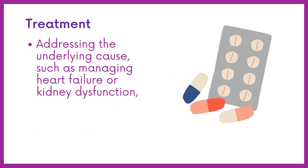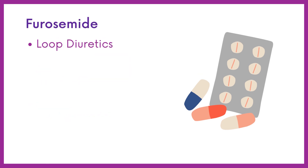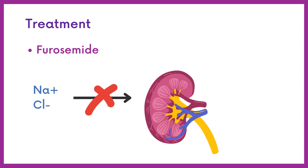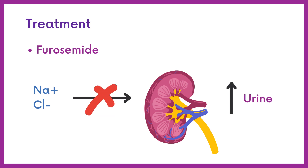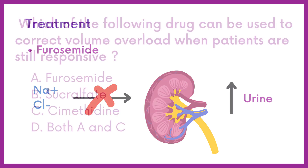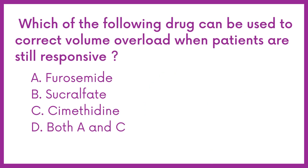Treatment typically involves addressing the underlying cause, such as managing heart failure or kidney dysfunction, and utilizing diuretic medications like furosemide. Furosemide is a loop diuretic that works by inhibiting the reabsorption of sodium and chloride in the kidneys, leading to increased urine production and removal of excess fluid from the body. So, the answer is option A.